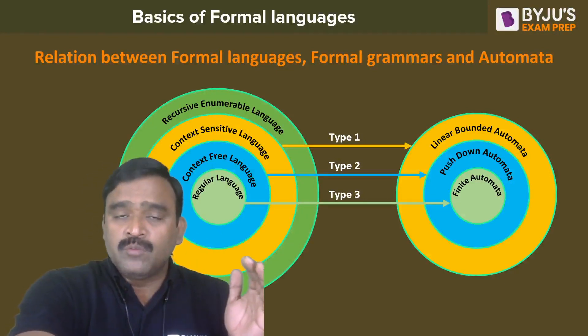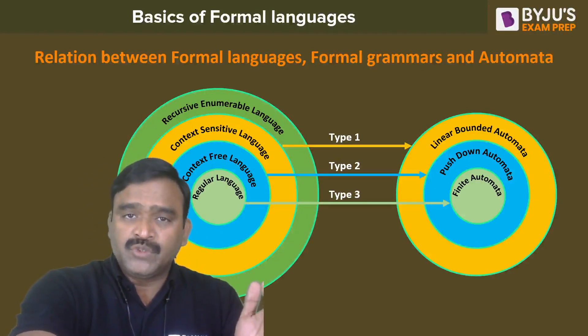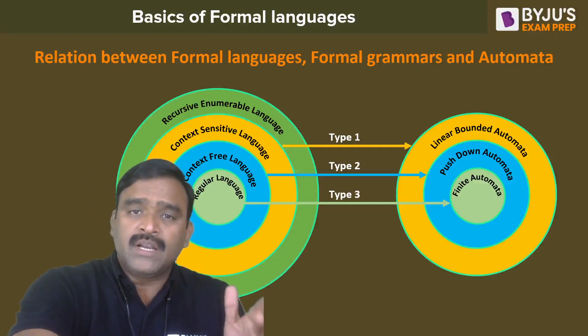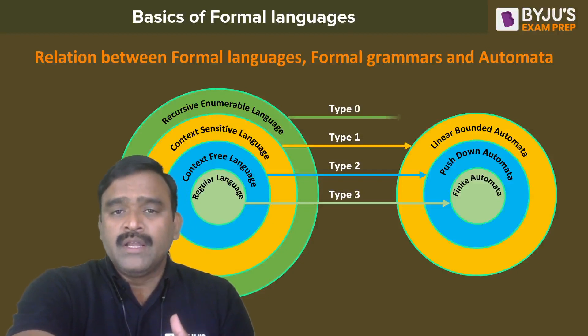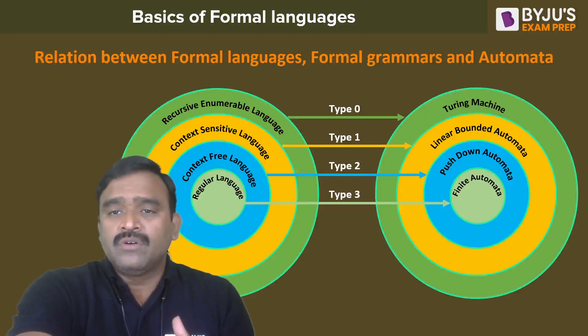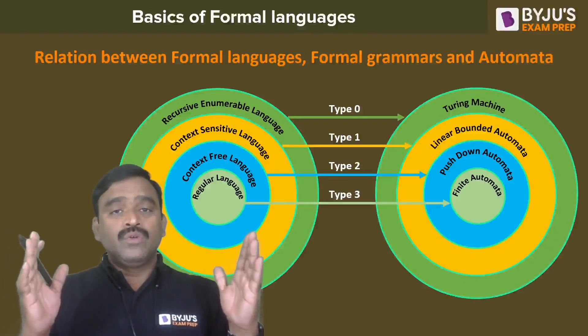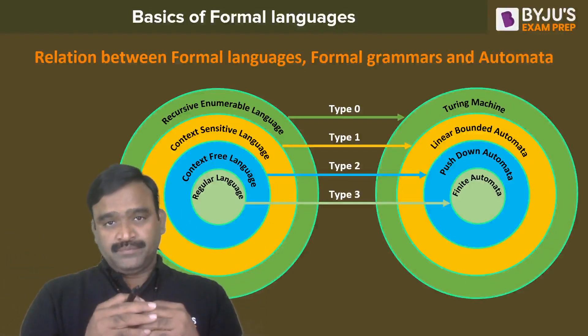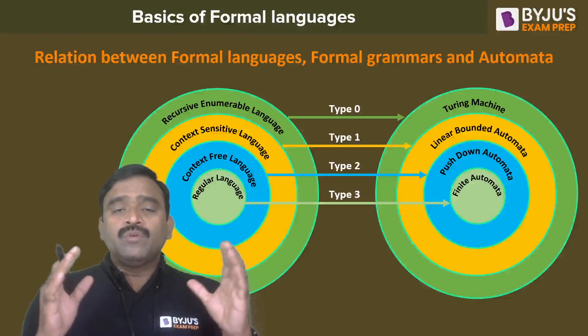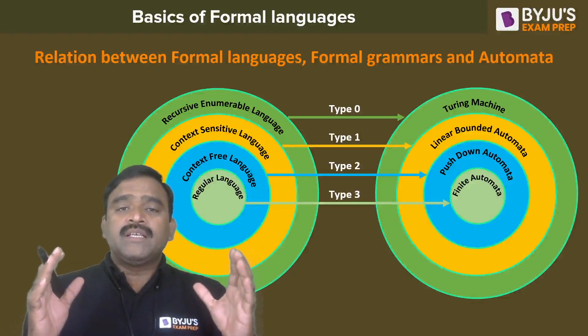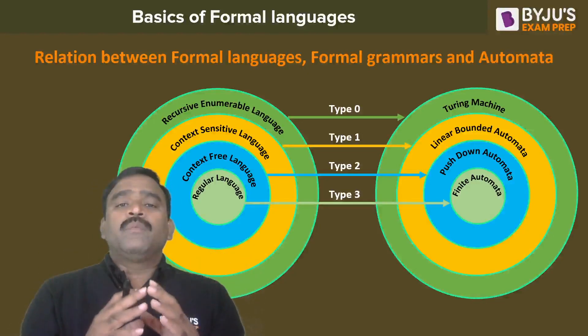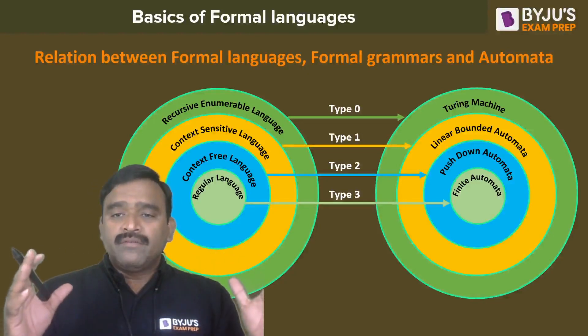Recursively enumerable languages, which include recursive and recursively enumerable sets, are Type 0 and are recognized by Turing machines. The Turing machine is the most powerful machine compared to all other machines.